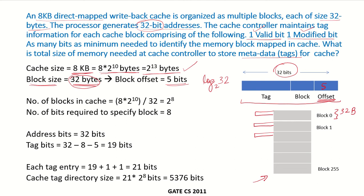Now we need to find how many blocks there are in the cache. The cache size is 8 times 2 to the power of 10 and the block size is 32 bytes, so dividing gives us 2 to the power of 8, which is 256 blocks — from block 0 to block 255. If there are 2 to the power of 8 blocks, then 8 bits will be required to specify a particular block. So in this memory address, 8 bits are used to specify the block.